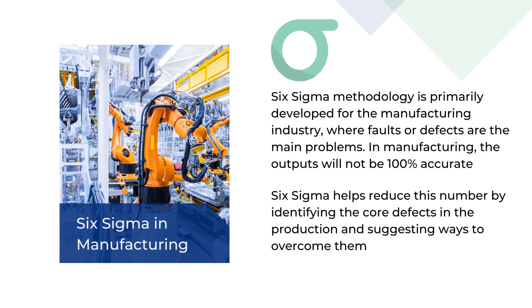With Six Sigma, the defects are reduced to 3.4 per million products manufactured. Here, the various advantages and disadvantages of implementing Six Sigma processes in manufacturing are discussed.